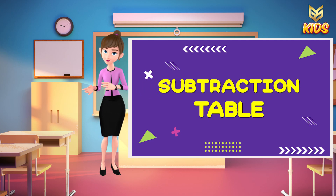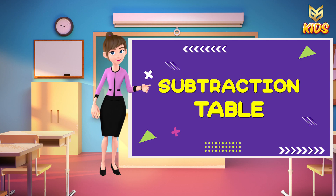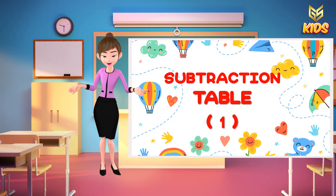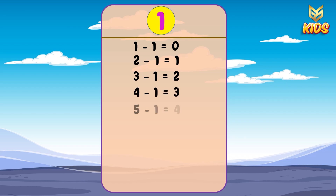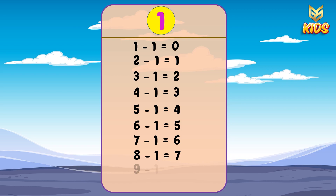Let's start with table number one. 1 minus 1 is equal to 0. 2 minus 1 is equal to 1. 3 minus 1 is equal to 2. 4 minus 1 is equal to 3. 5 minus 1 is equal to 4. 6 minus 1 is equal to 5. 7 minus 1 is equal to 6. 8 minus 1 is equal to 7. 9 minus 1 is equal to 8. And 10 minus 1 is equal to 9.